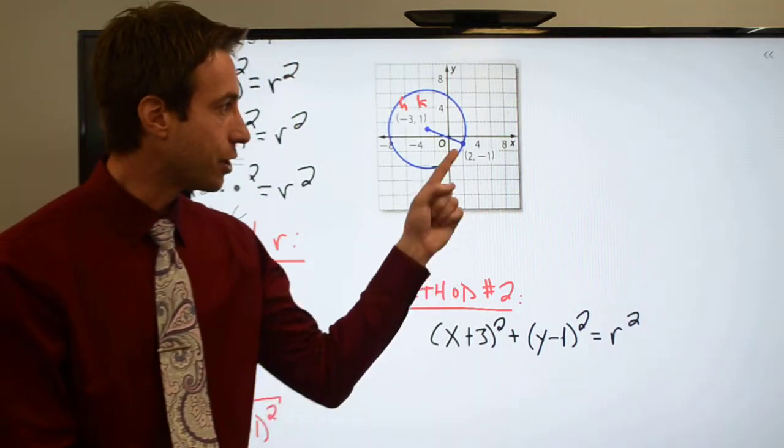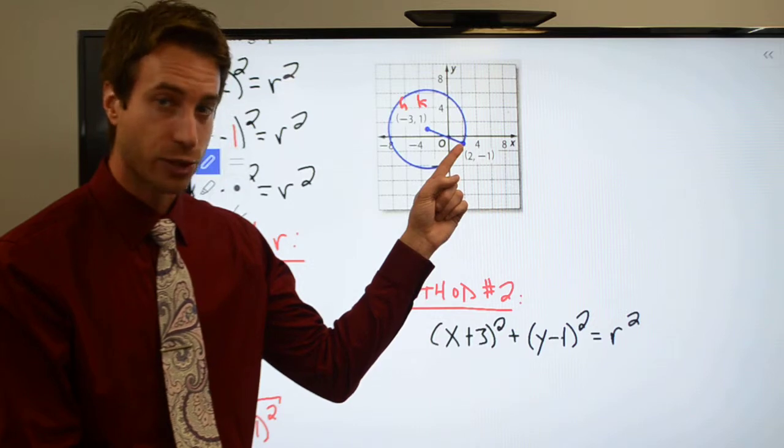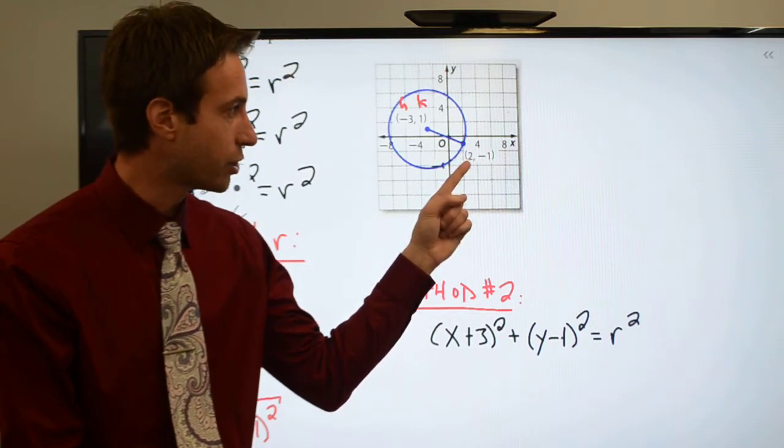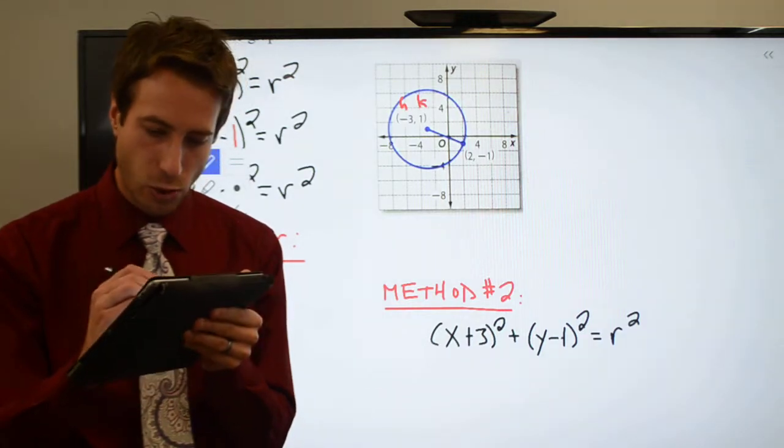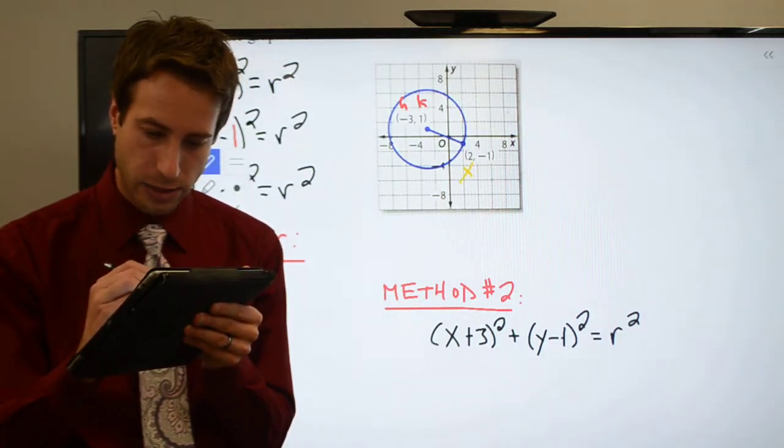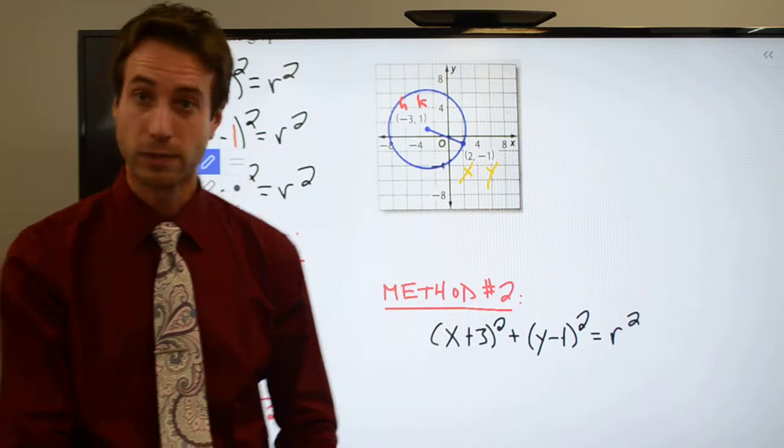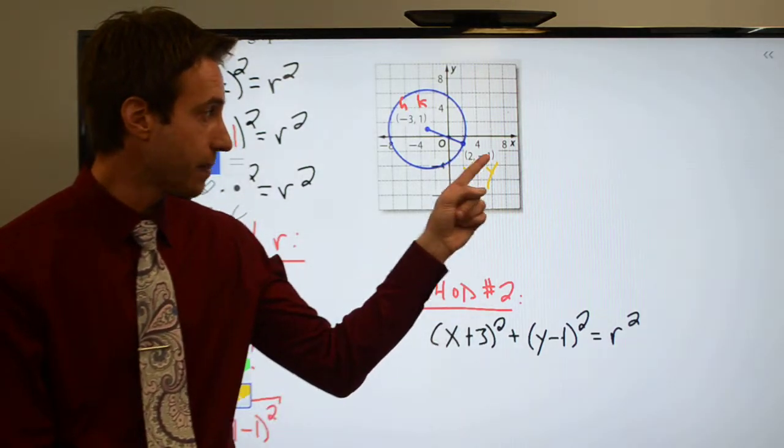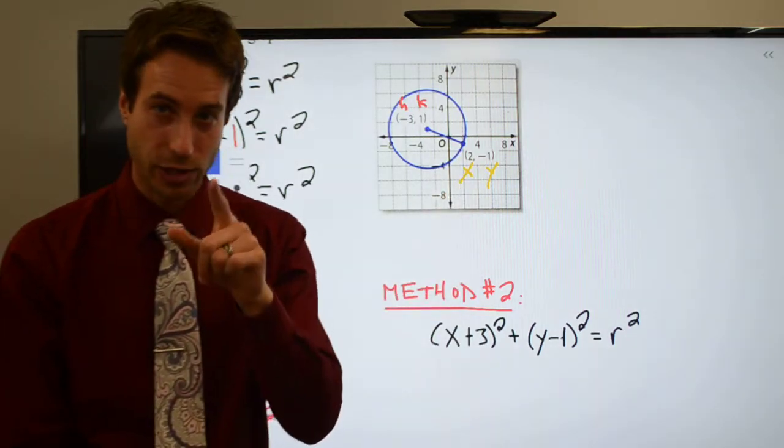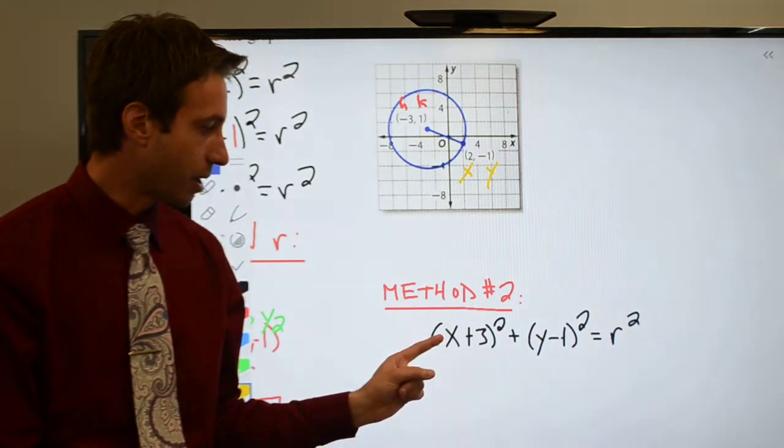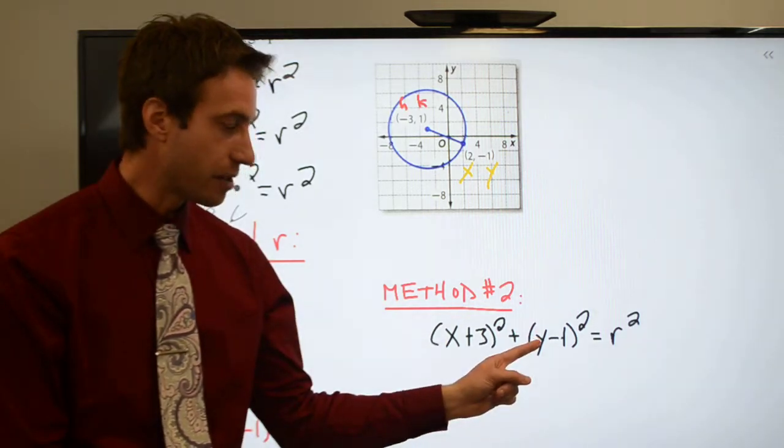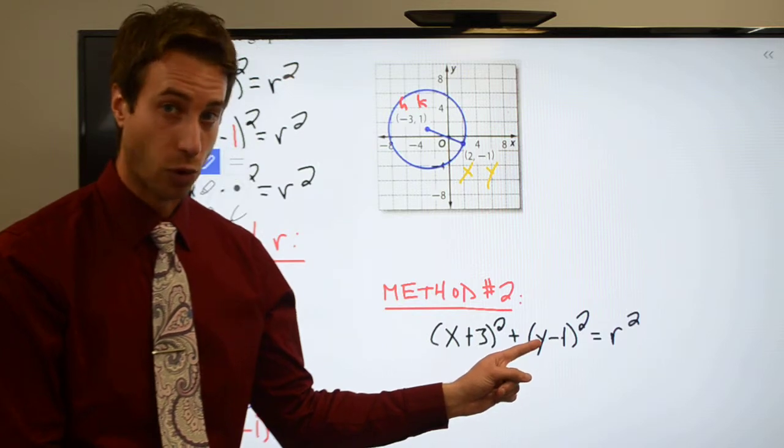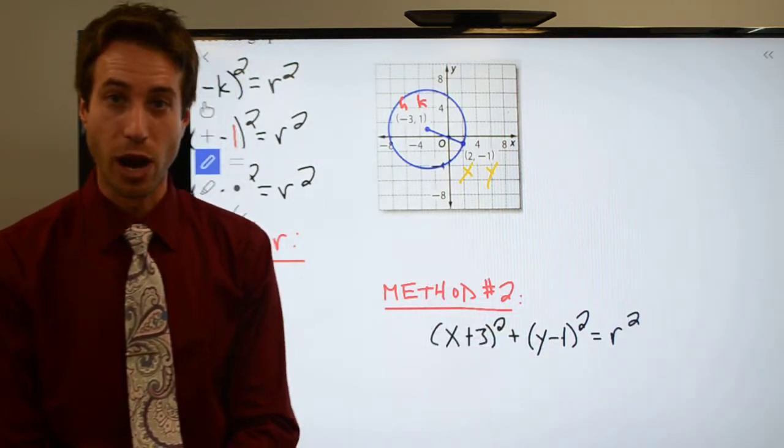Instead of using the distance formula to find the radius, right? Check this out. What I've done is I have given you a point on the circle, right? This point right here on the circle, 2 minus 1. Well, guys, that's an ordered pair. x, y, right? Ordered pair. That's the x coordinate. That's the y coordinate. Check this out.